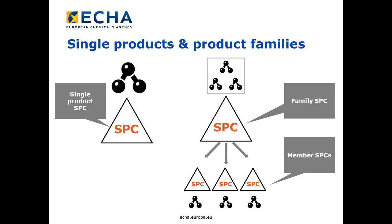SPC assists four single products and product families. For a single product, one SPC is required per market area or language. For a product family, an overall family SPC is required and an additional SPC for every family member. The family SPC defines the frame conditions applicable to all family members, such as the concentration range for the active substance and other substances and the classification. The member SPCs can contain the individual concentrations of the family's active substances and possibly specific individual non-active substance concentrations.